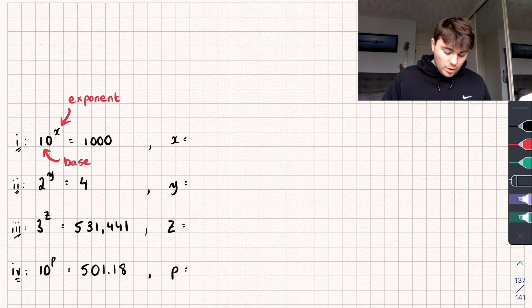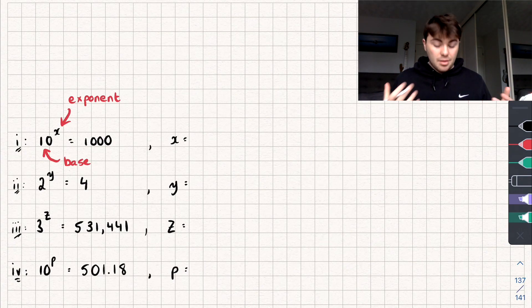Here are the questions. The first one is we have 10 to the power of x equals 1000 and we need to solve to find that value of x.